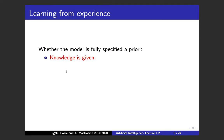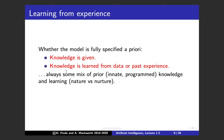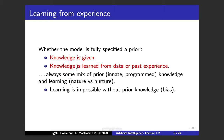The next dimension is learning — whether the model is specified a priori or knowledge is learned from data and past experience. It's always some mix of innate or programmed knowledge and learning — in psychology this is the nature-versus-nurture debate. Most of this course focuses on given knowledge; there are separate machine learning courses for the learning side. It turns out that learning is impossible without some prior knowledge, and understanding that prior knowledge — called the bias in statistics — is much of what this course is about.